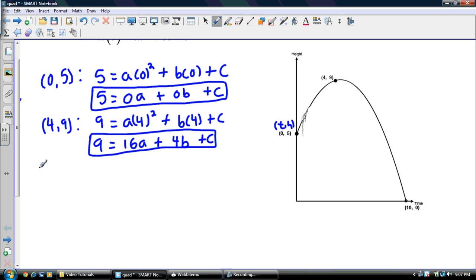And last point is (10, 0). So, we have 0 is equal to a times 10 squared, plus b times 10, plus c. And that leaves us with 0 is equal to 100a, plus 10b, plus c. And that is our three equations.